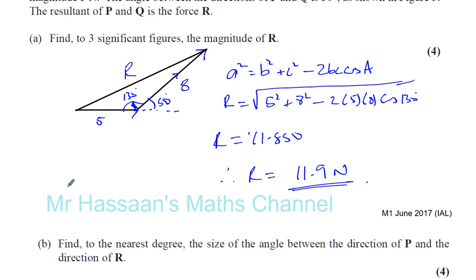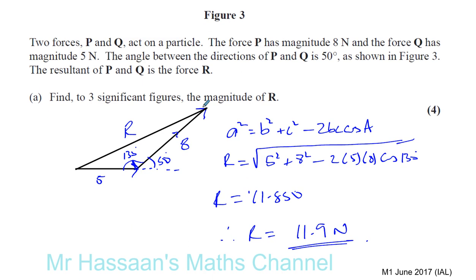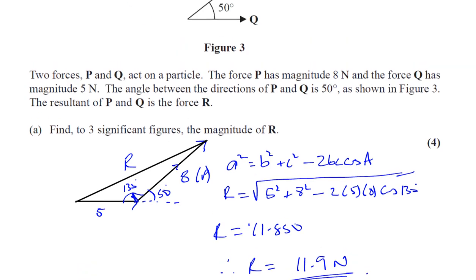That's part A, and part B, pretty simple as well. To find to the nearest degree the size of the angle between the direction of P and the direction of R. So let's remember here, P is this and this is R. So we're going to find the angle between those. That is the angle between them. You can see the angle between them. If you continue this line across and you continue that line across, the angle between them is this angle over here which is the same as this angle here. Let me call it angle X.